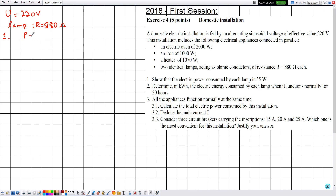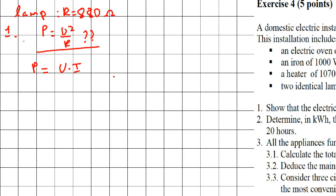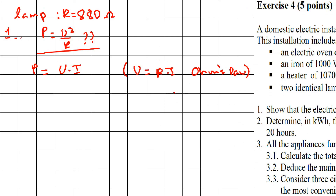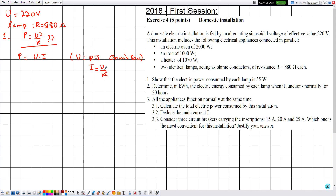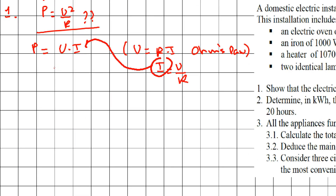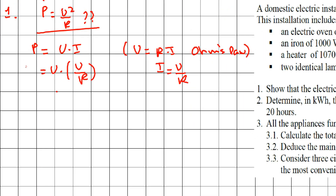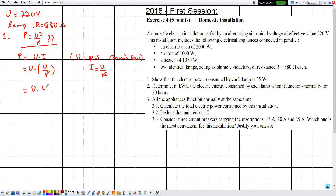We start from the general form P equals U multiplied by I. We want to prove P equals U squared divided by R. Since R appears in the equation, we apply Ohm's law: U equals R multiplied by I, which gives I equals U divided by R. Substituting this into P equals U times I, we get P equals U multiplied by U divided by R, which simplifies to P equals U squared divided by R.